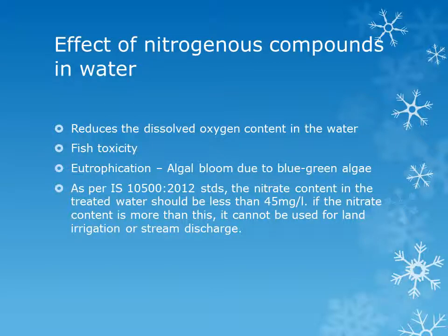The first important effect of nitrogenous compounds in water is that they reduce the dissolved oxygen content, causing a high oxygen demand due to bacterial activity. Second is fish toxicity — when oxygen levels drop, it creates a toxic environment for fish and other aquatic animals. Another problem is eutrophication, otherwise called algal bloom due to blue-green algae, which forms a layer over the water surface, preventing sunlight from entering — a serious problem for aquatic plants and animals.